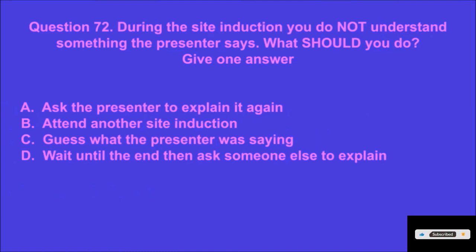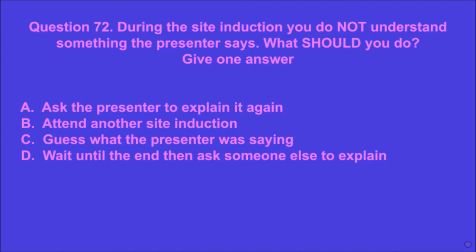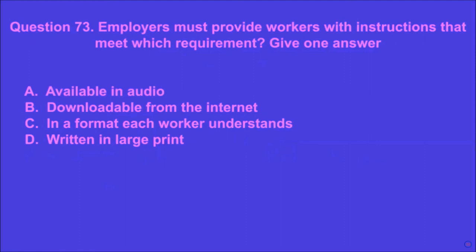Question 72: During the site induction you do not understand something the presenter says. What should you do? Give one answer. A: ask the presenter to explain it again, B: attend another site induction, C: guess what the presenter was saying, D: wait until the end then ask someone else to explain. A is the correct answer.